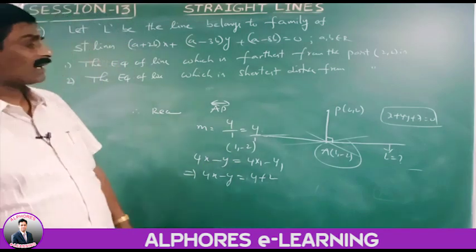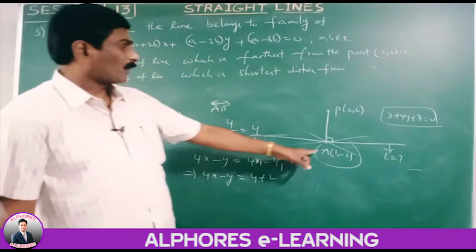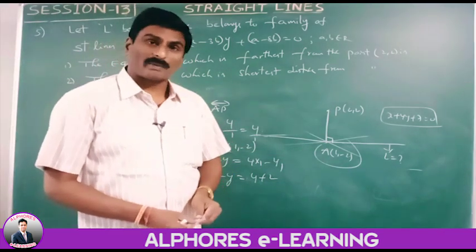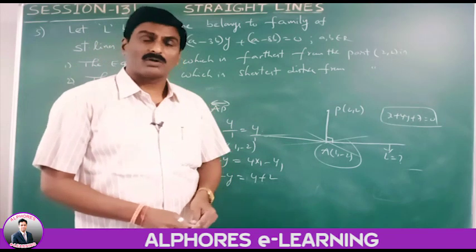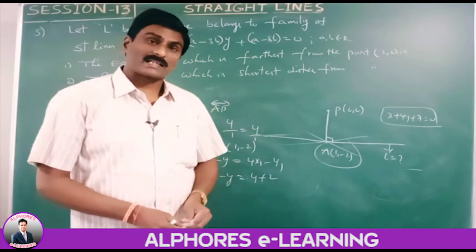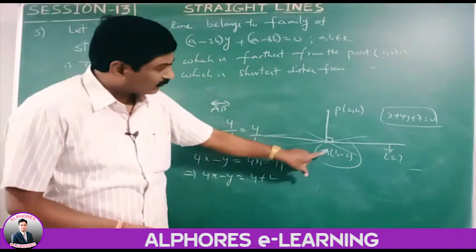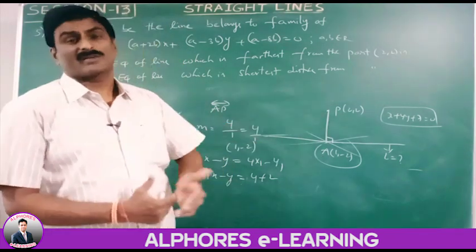By the two-point form: (y minus y1)/(y2 minus y1) equals (x minus x1)/(x2 minus x1). Using this formula also gives the equation of line PA as 4x minus y minus 6 equals 0.